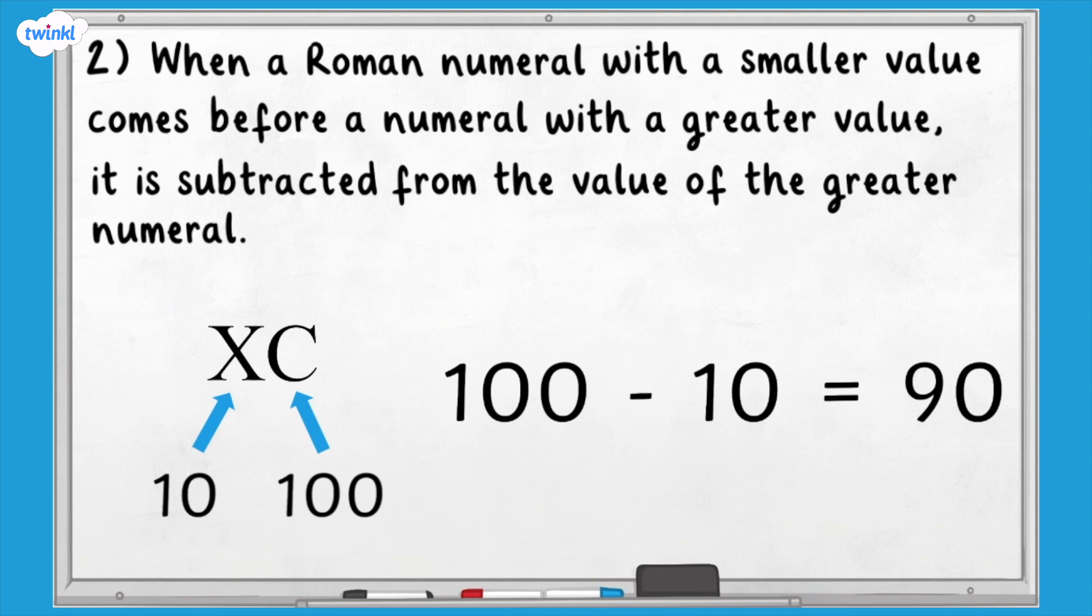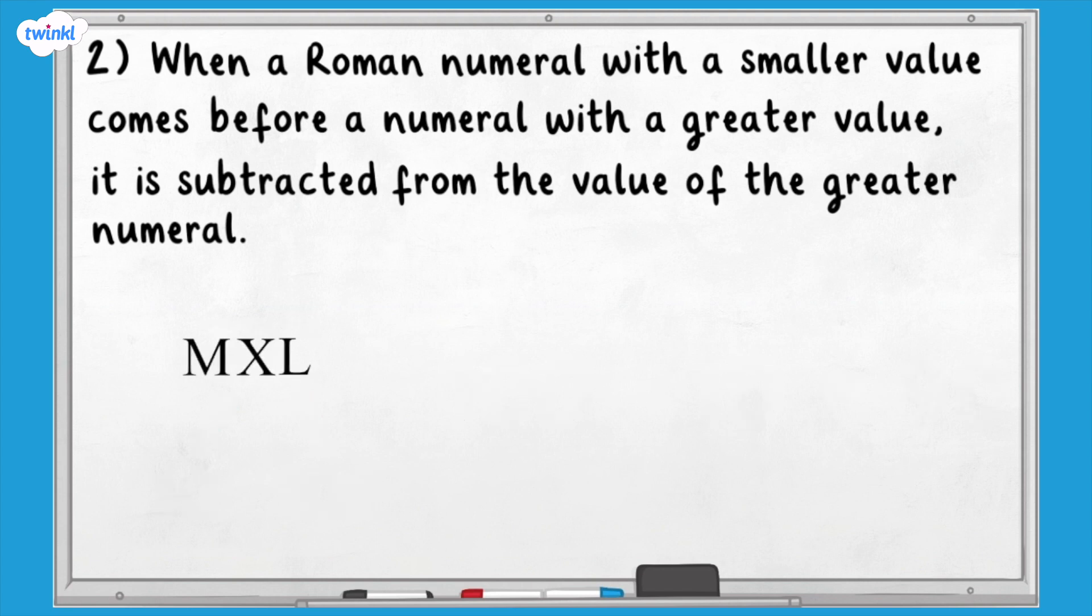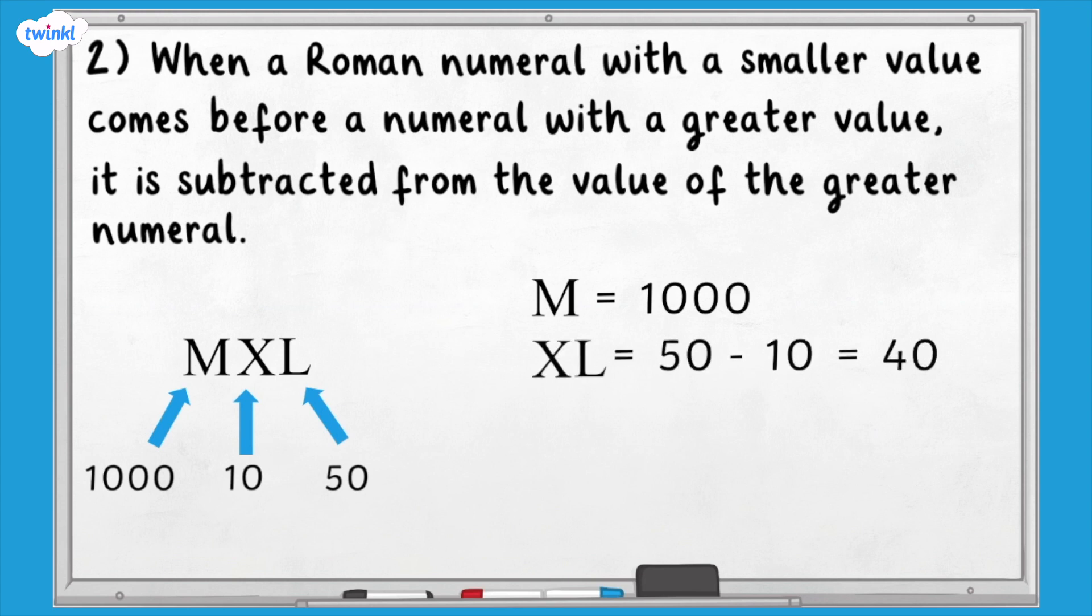Let's look at an example with more numerals. MXL. M represents 1000, X represents 10 and L represents 50. Because X has a smaller value than L, we subtract it. 10 subtracted from 50 equals 40. We can then add this to the 1000 represented by the M. MXL equals 1040.